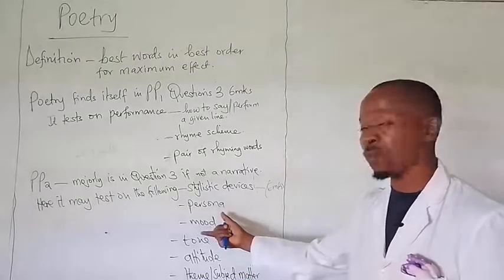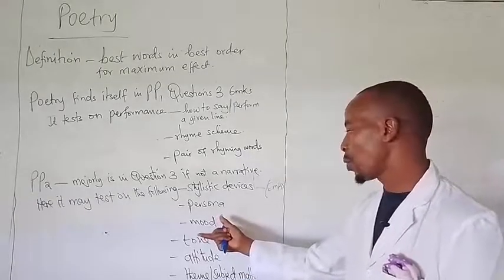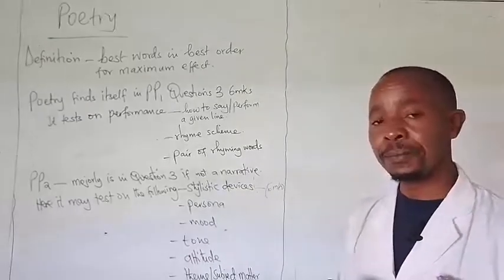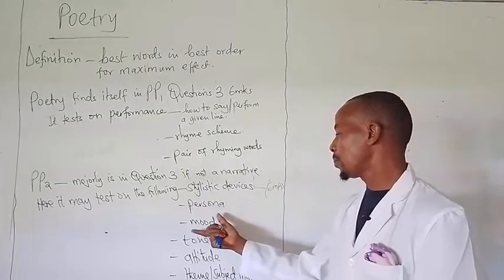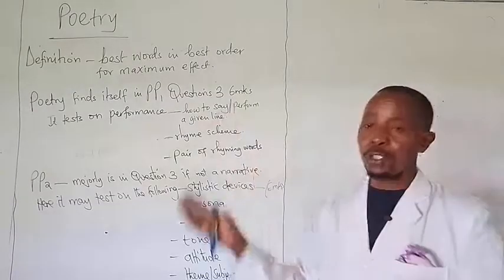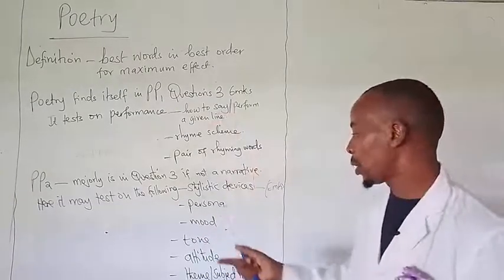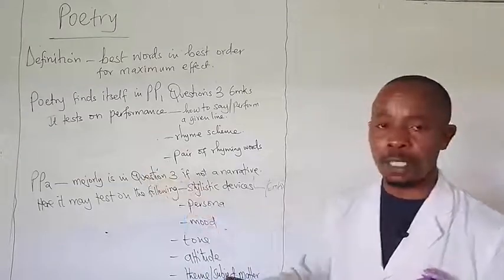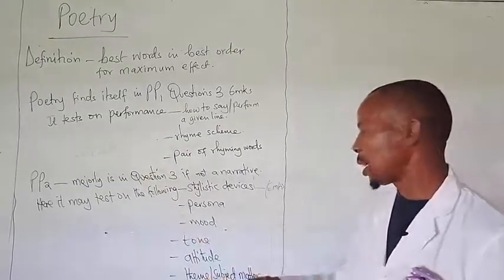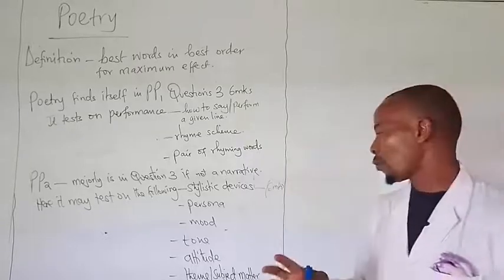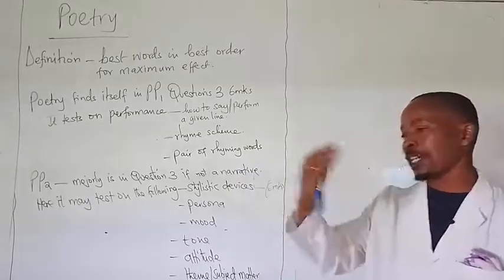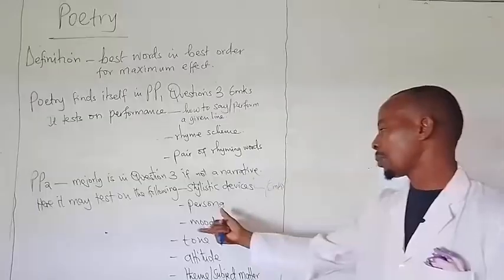There is also the part of mood. Talking about mood, we are talking about the prevailing atmosphere in the poem. The atmospheric occupation of that particular poem is dependent on the subject matter — what kind of information is there. This mood is derived from the choice of words and their arrangement.